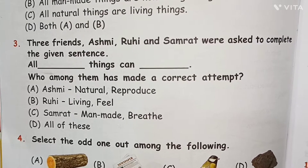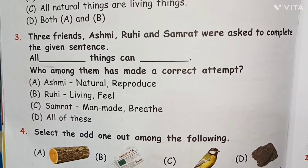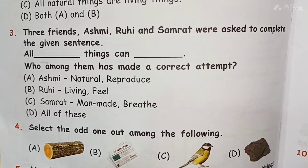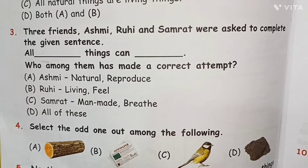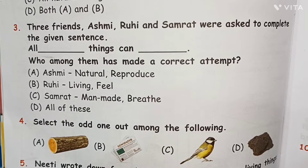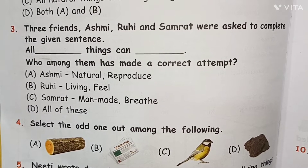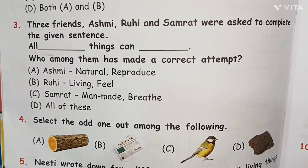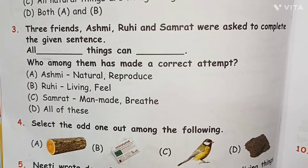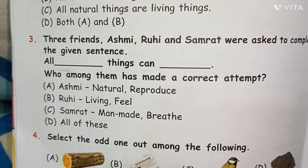Question 3: Three friends Ashmi, Ruhi, and Samrat were asked to complete the sentence 'All blank things can blank.' Ashmi said natural/reproduce — all natural things can reproduce? No. Ruhi said living/feel — all living things can feel? Option C: all man-made things can breathe? No. The answer is B: all living things can feel.